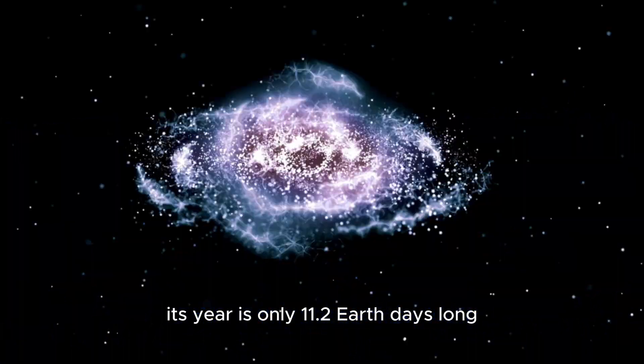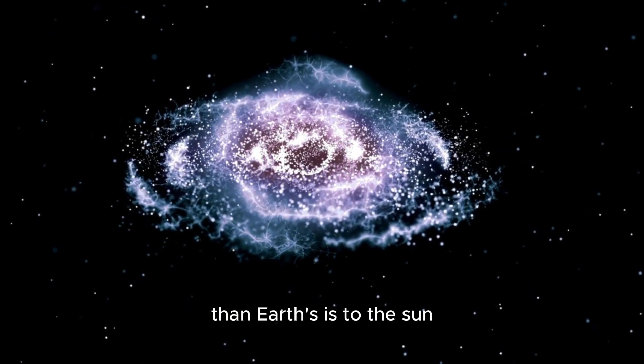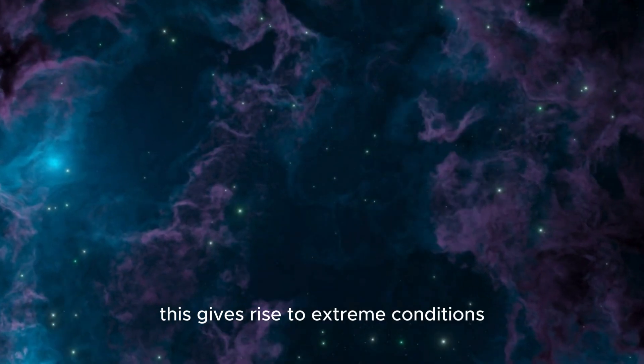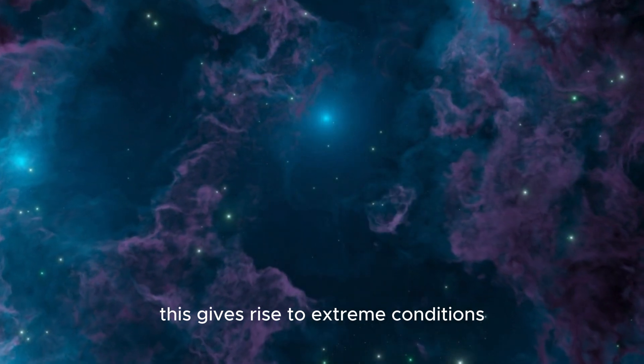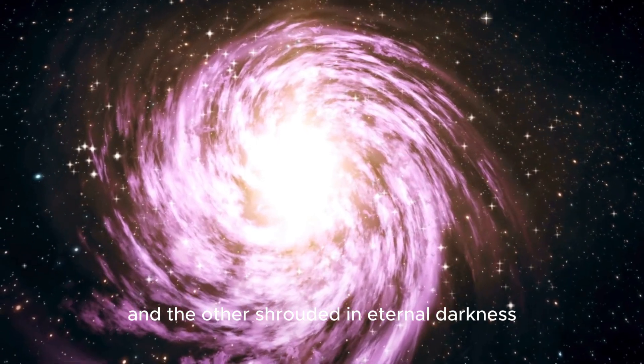Its year is only 11.2 Earth days long, and its orbit is much closer to its star than Earth's is to the Sun. This gives rise to extreme conditions, with one hemisphere bathed in perpetual daylight and the other shrouded in eternal darkness, adding to the planet's atmosphere of mystery and potential marvel.